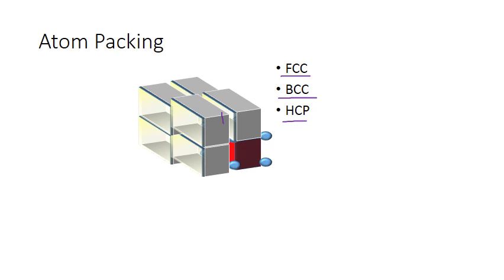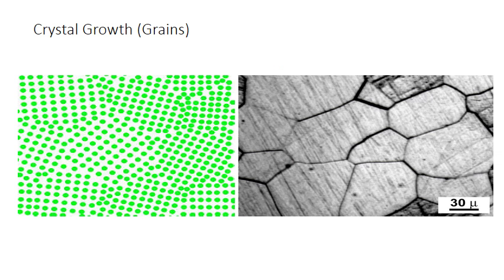There is plenty of information available on metal crystal structures, but this will define the mechanical properties of the metal. When atoms or ions start packing on top of each other, you get the growth of crystals.